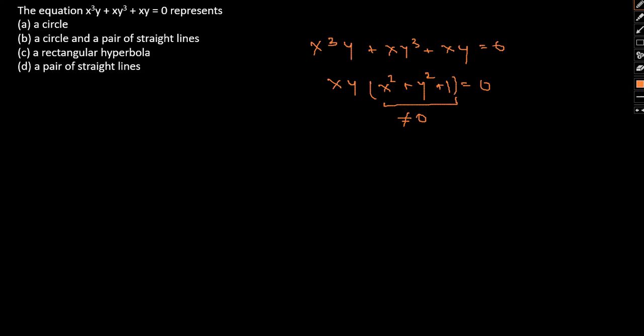This term cannot be equal to zero because the minimum value for x² + y² + 1 would be 0 + 0 + 1 = 1. This term has to be greater than zero and the minimum value will simply be one. Therefore, xy has to be equal to zero.